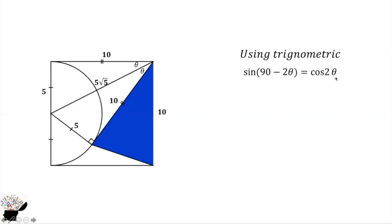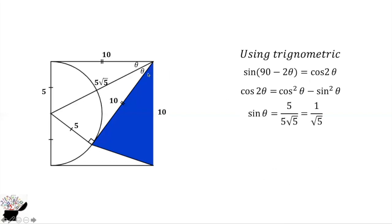We need to find sine of (90 minus 2 theta), which equals cos 2 theta. We know that cos 2 theta equals cos squared theta minus sine squared theta. Sine theta is opposite over hypotenuse: 5 divided by 5 root 5, which equals 1 over root 5.